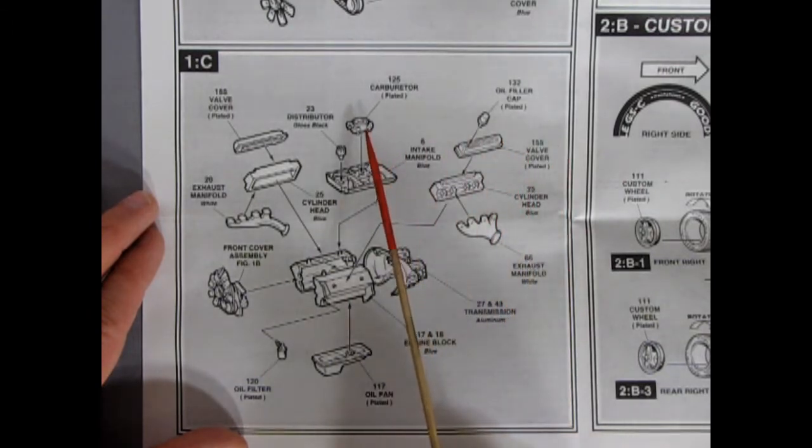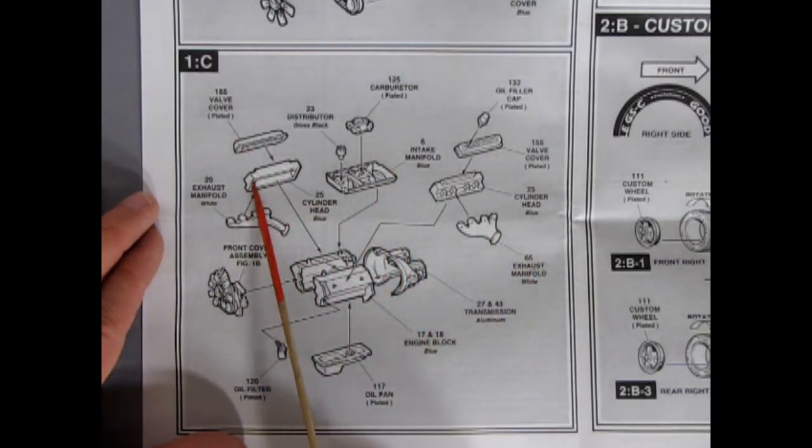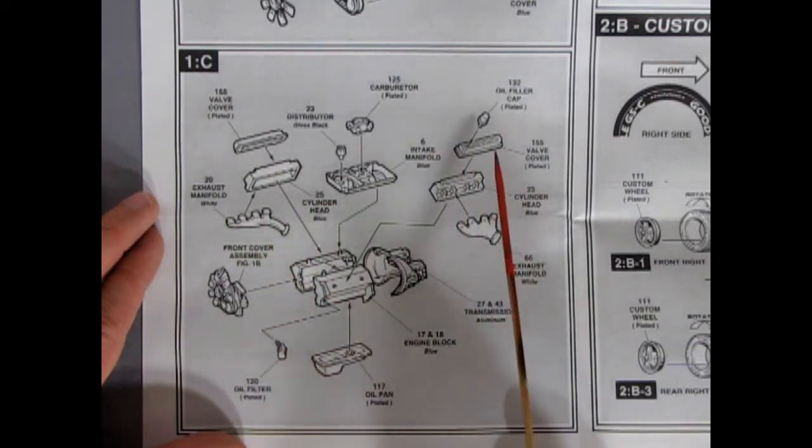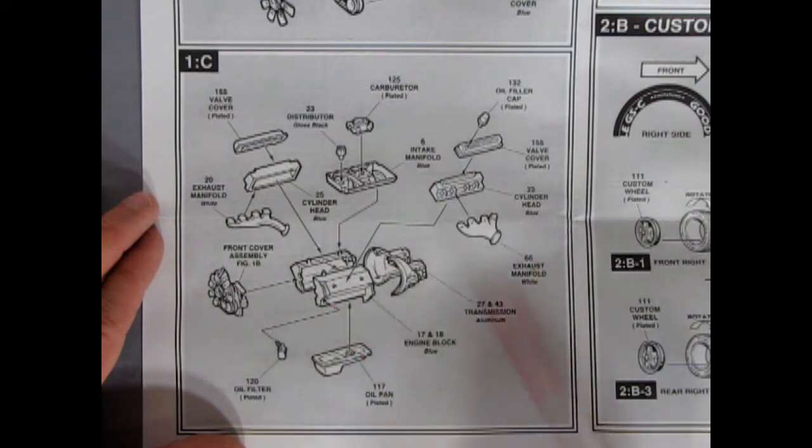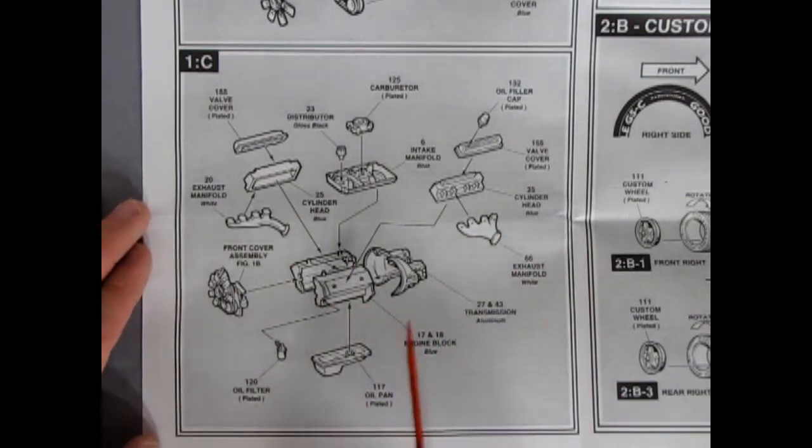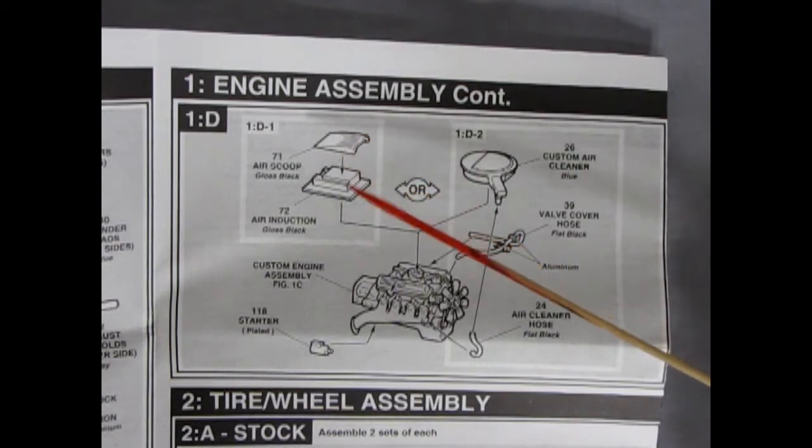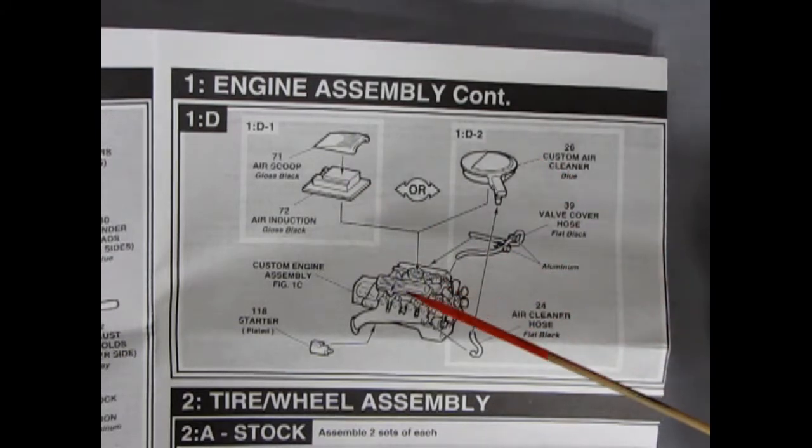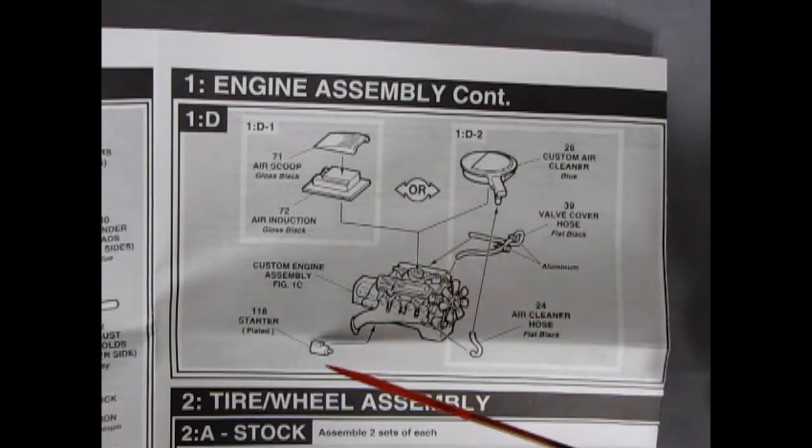So here we have a different carburetor. The intake manifold, a different one. So you could actually display two motors side by side with this. Valve cover, cylinder head, exhaust manifold on both sides. There's an oil filler cap on here. Then that front assembled engine cover will glue on with your oil filter going in there. And the oil pan. And then there's a part D to this. And now we're looking at engine assembly 1D. And here we have an air scoop that goes through the hood, as well as an air induction box, which will glue onto our carburetor. Or you can use the custom air cleaner, which it looks like a ram air actually. It's got that slot in there. And then there's an air cleaner hose down below. And then valve cover hose going on the top. And there it shows where the starter goes on this.